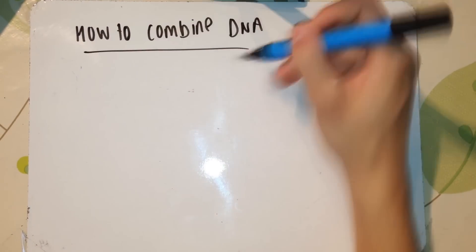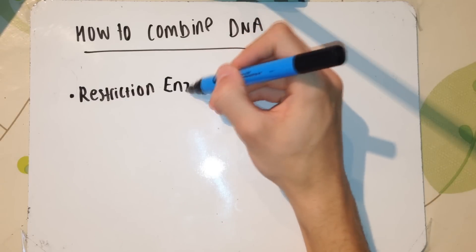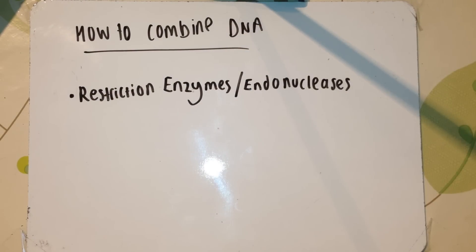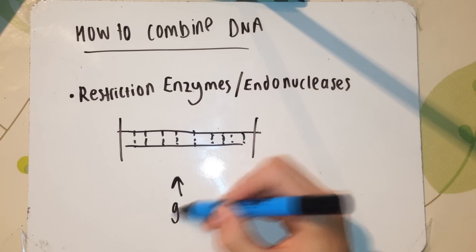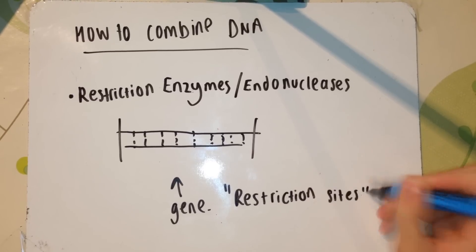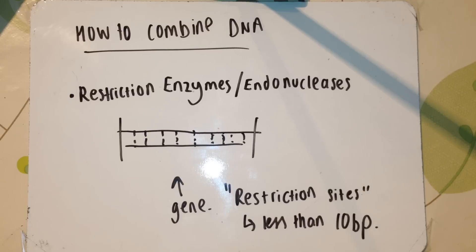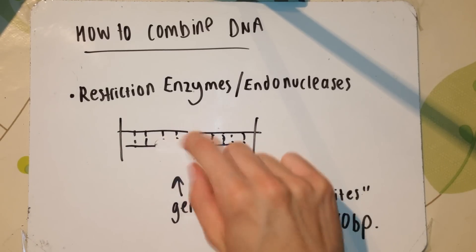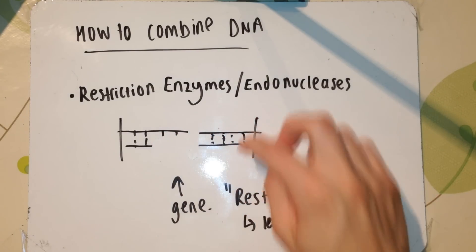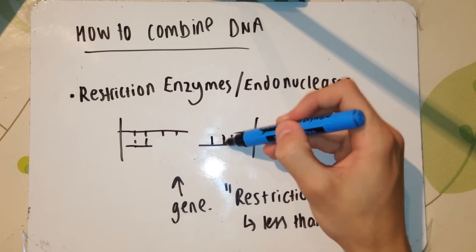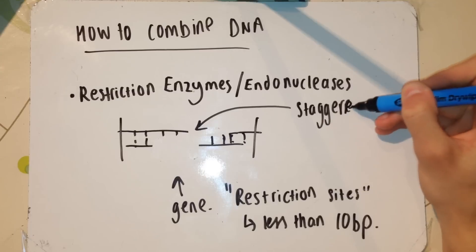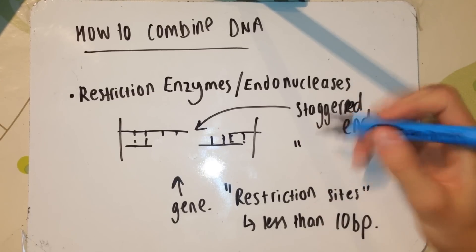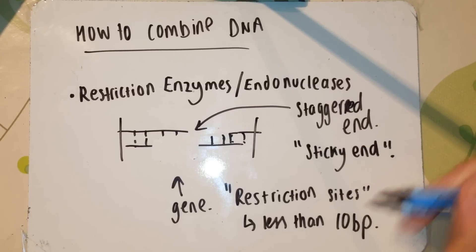First I want to talk about how to combine and separate — obviously you've got to separate it first — then combine two different parts of DNA from two different organisms. The thing we're going to use are called restriction enzymes, or restriction endonucleases, the proper name for them. Restriction enzymes work at restriction sites, which are basically sites less than 10 base pairs. Different restriction enzymes have specific restriction sites. The restriction enzyme essentially catalyses the hydrolysis — it hydrolyses the sugar phosphate backbones of the DNA molecule. And what this leaves is staggered cuts.